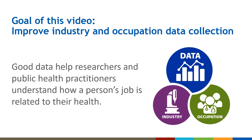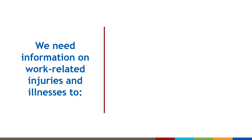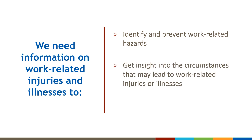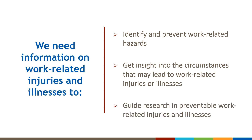Good industry and occupation data help us to better understand how a person's job is related to their health. We need information on work-related injuries and illnesses to identify and prevent work-related hazards and get insight into the circumstances surrounding injuries or illnesses. This information may lead to early event detection — are we seeing something new that hasn't been an issue before? Compiling and analyzing data about work-related outcomes will help guide research and prevent work-related injuries and illnesses in the future.